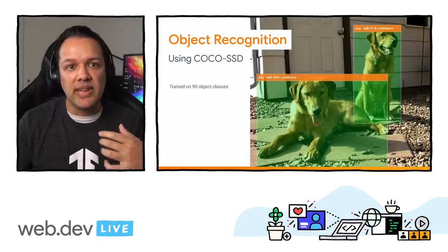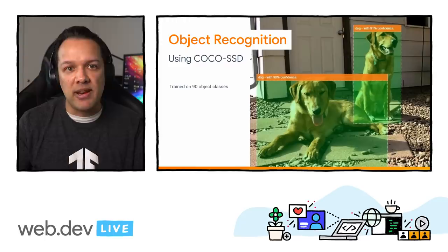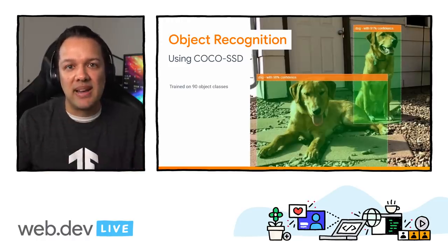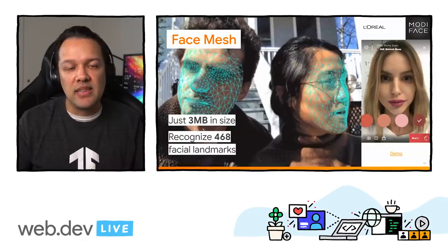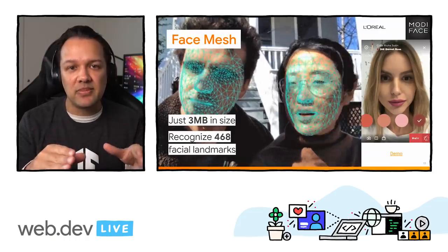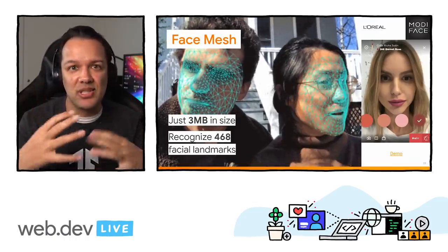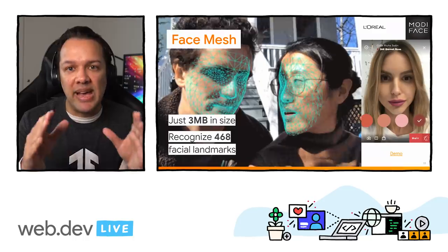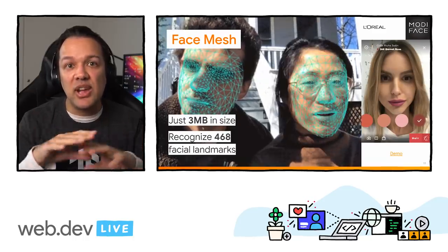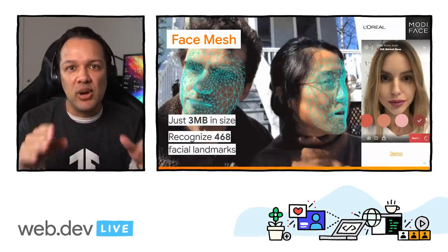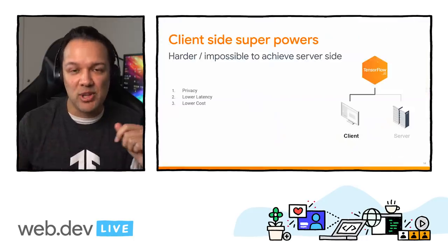Here's the object recognition in action — this model allows you to recognize 90 pre-trained objects like these dogs, and you get bounding boxes back at the same time. Face mesh is just three megabytes in size and lets you understand 468 unique landmarks on a face — great for face masks or AR experiences. Modiface, part of the L'Oreal group, has used this for AR makeup try-on, and the lady on the right is not actually wearing any makeup — she's selecting the color of makeup she wants to try on in real time in the web browser in a much more hygienic way.